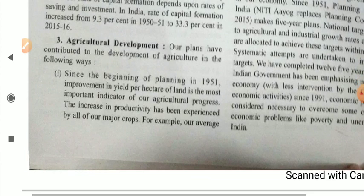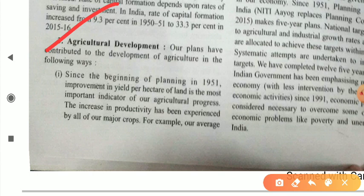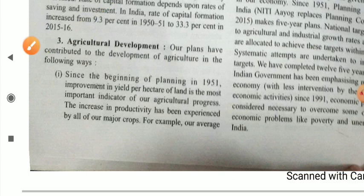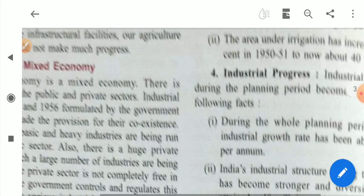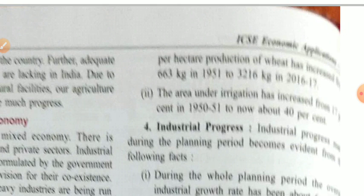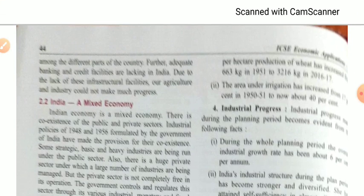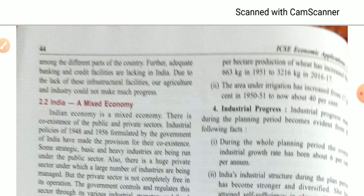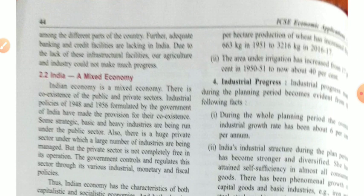The next point is agriculture development. Our plans have contributed to the development of agriculture. Since the beginning of planning in 1951, improvement in yield per hectare is the most important indicator of agricultural progress. The increase in productivity has been experienced across all major crops. For example, the average per-hectare production of wheat increased from 663 kg in 1951 to 3,216 kg in 2016-17. In 2017-18, we were among the top countries in the production of wheat and rice.